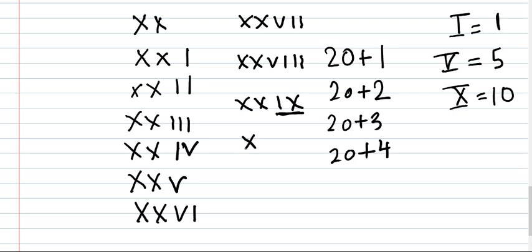Now 30. To write 31 it's easy, we will write similarly: 30 plus 1, 30 plus 2, 30 plus 3, similarly till 40.